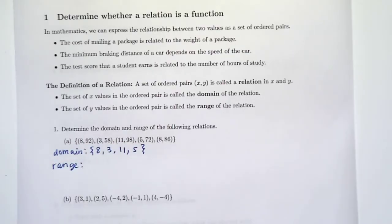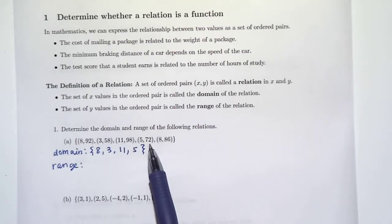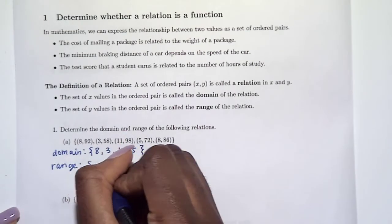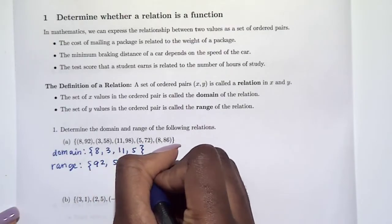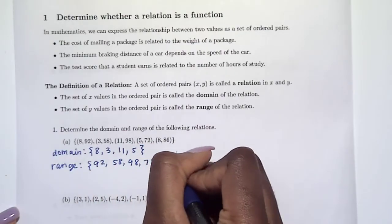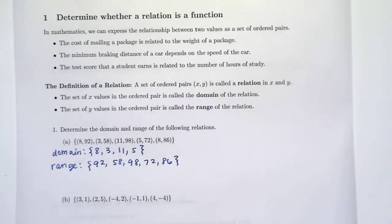Our range is the set of y values, so the y values we have are 92, 58, 98, 72, and 86. So this is the range of this relation that was given.